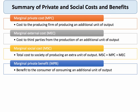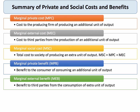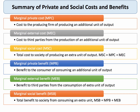Marginal private benefit is the benefit to the consumer of consuming the next item of a product. Marginal external benefit is the external or positive spillover benefit from the consumption of that unit. Marginal social benefit is the total benefit to society from consuming an extra unit, and it equals the marginal private benefit plus the marginal external benefit — in other words, the third-party spillover benefit.